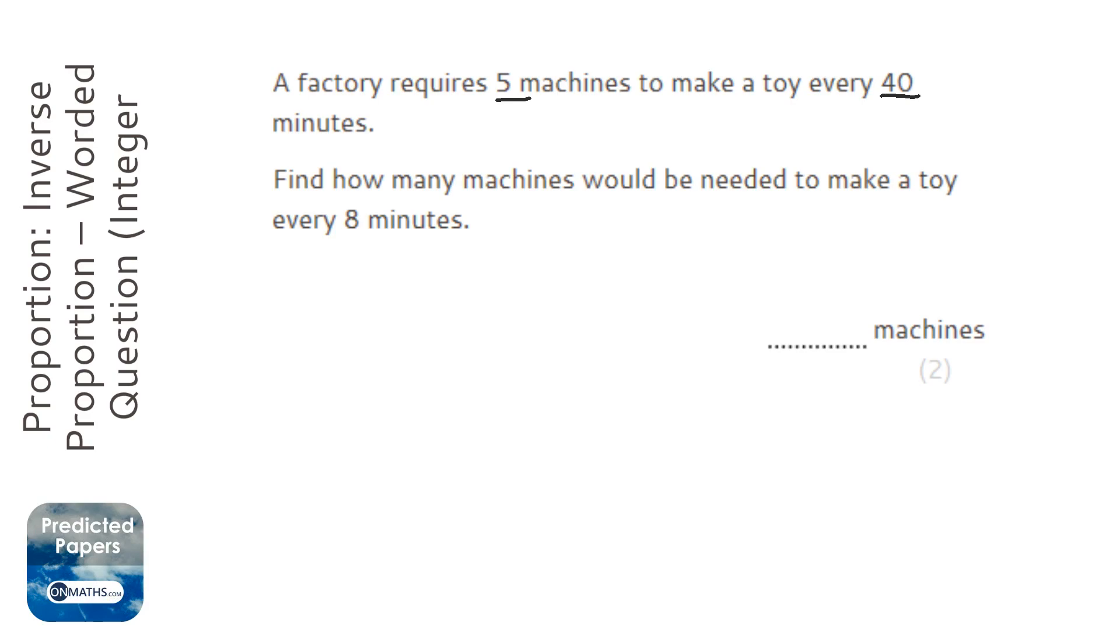If 5 machines take 40 minutes, that's almost an hour, to make one toy, then what, one machine's going to do it in 8 minutes? It just doesn't make sense. And a question like this that doesn't make sense, if one increases the other increases, is an inverse proportion question.